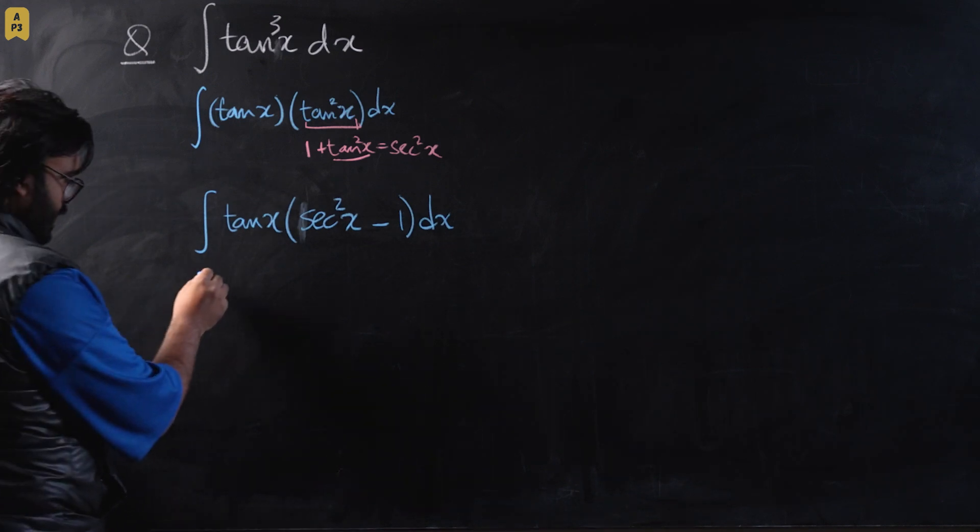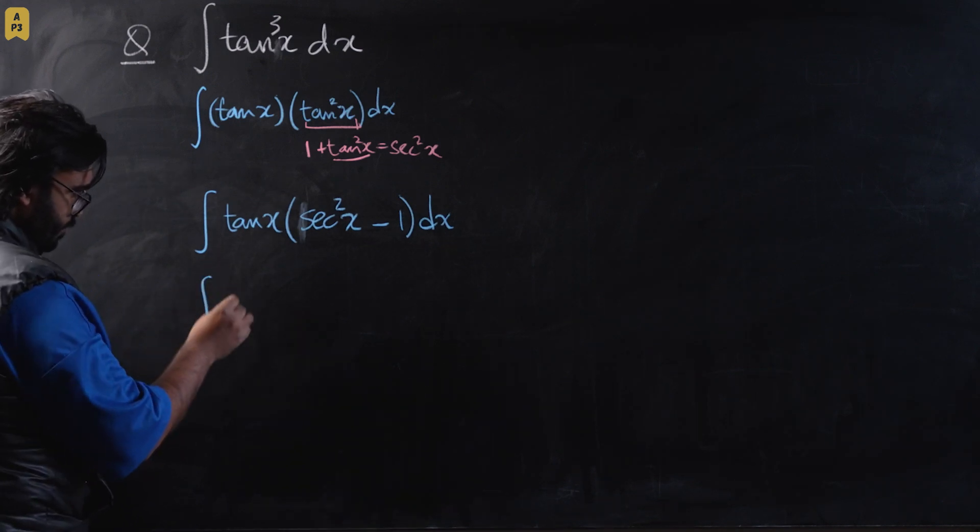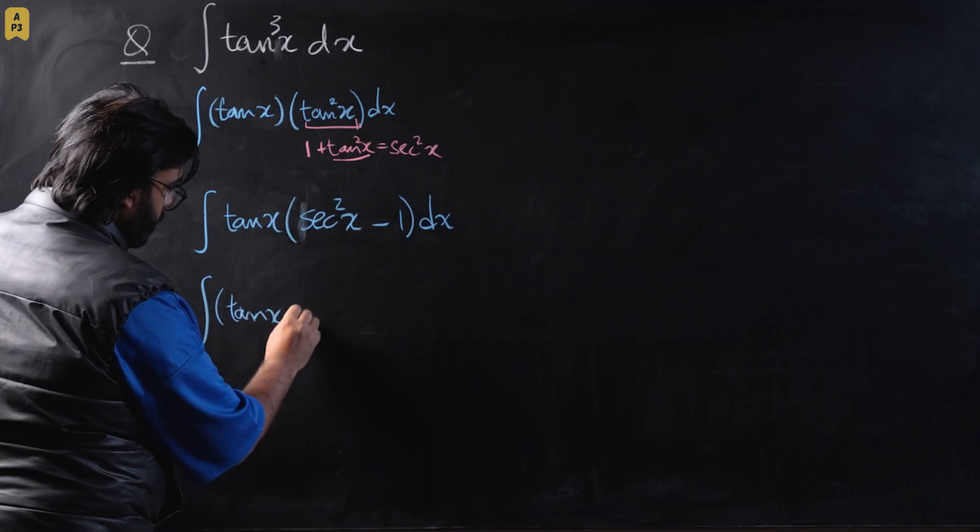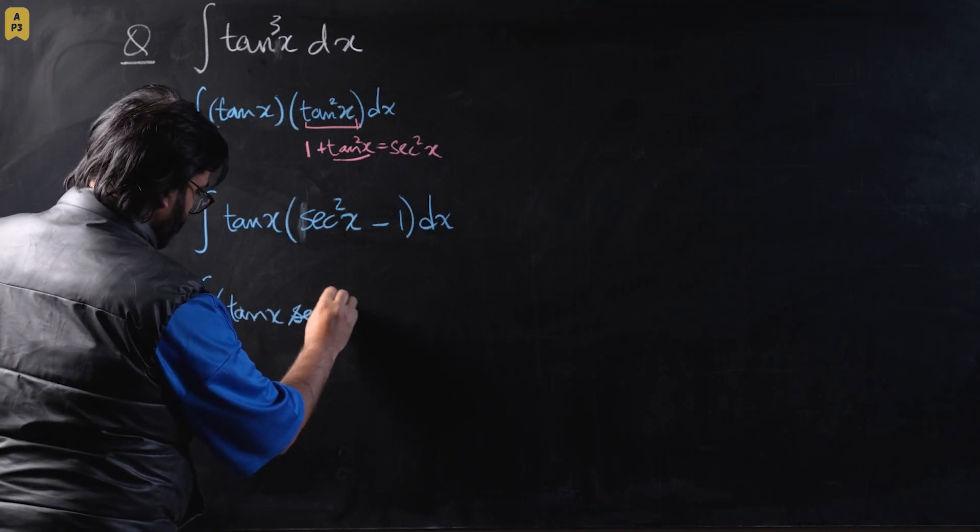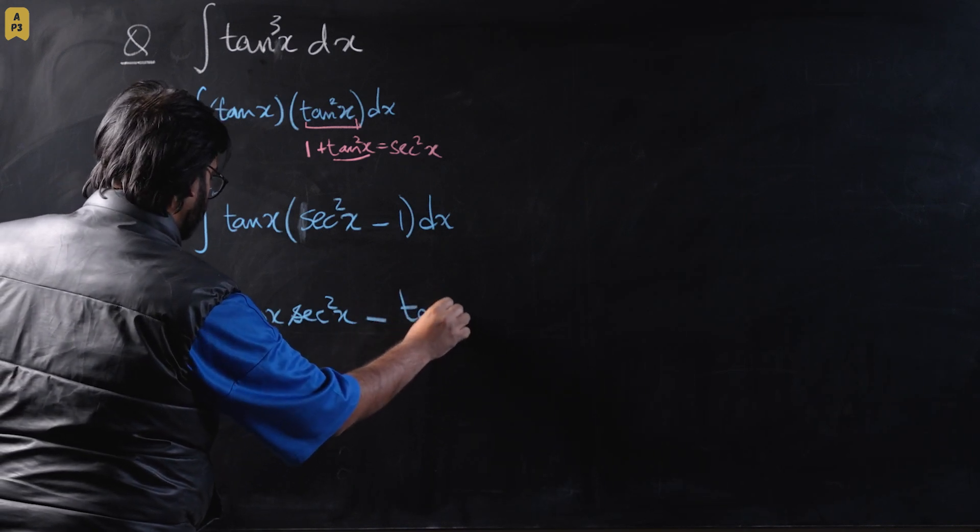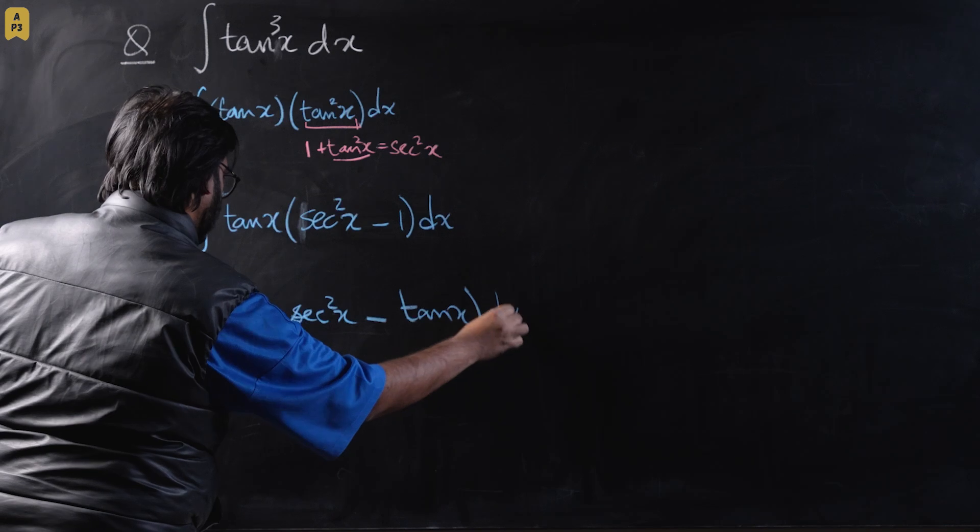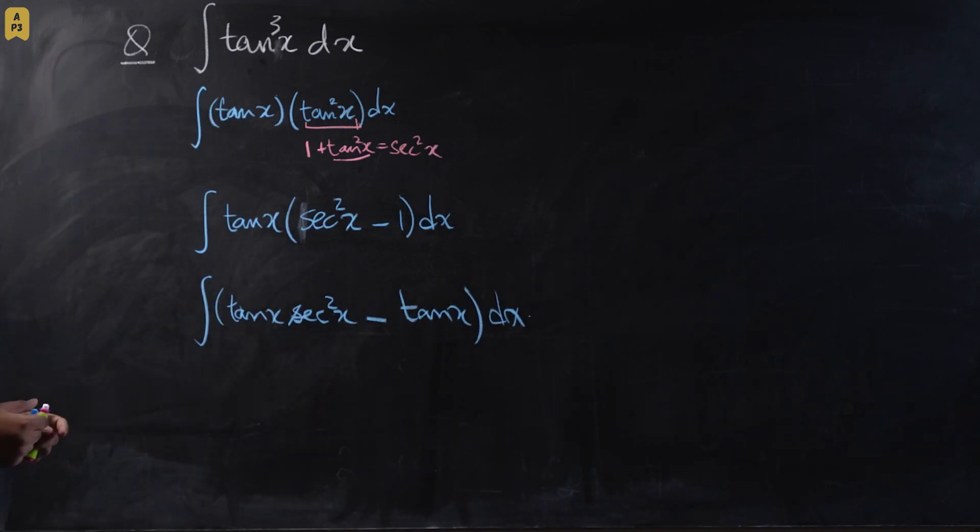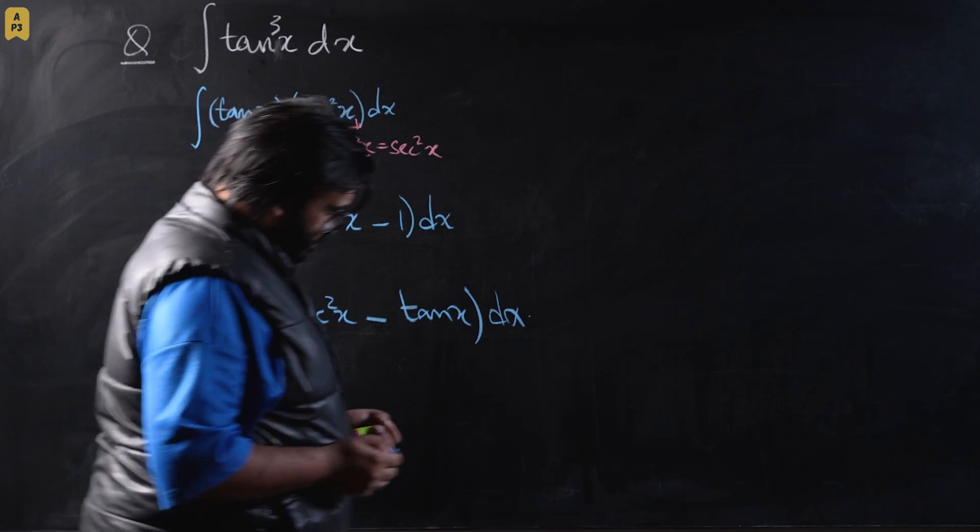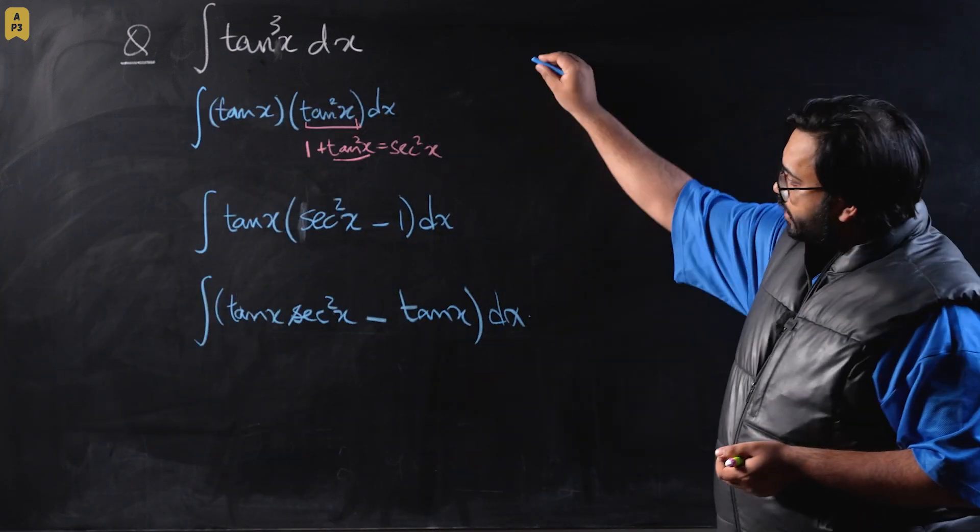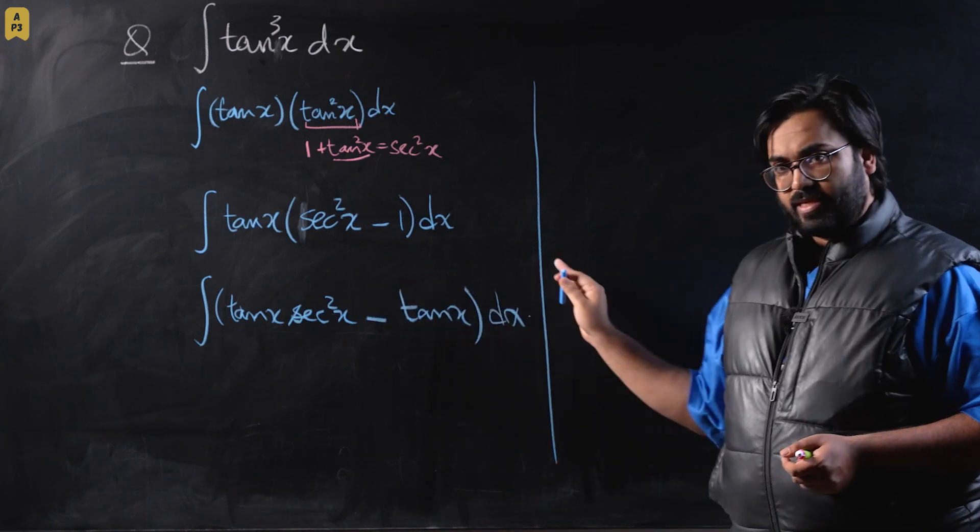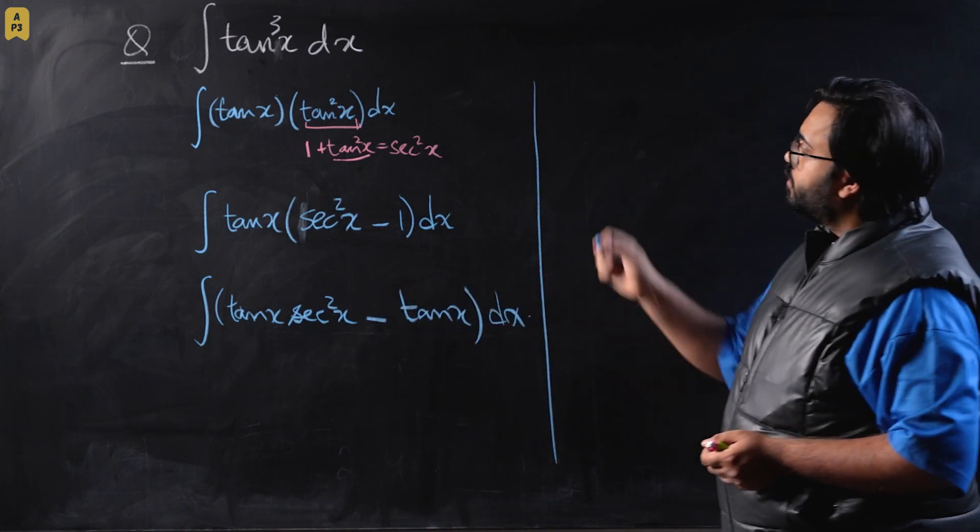This will be the function. I'm going to open this function and split it into two different integrals. This is tan x times secant squared x minus tan x dx. These are two different terms which are being added or subtracted, so we can open a separate integral for both of these.